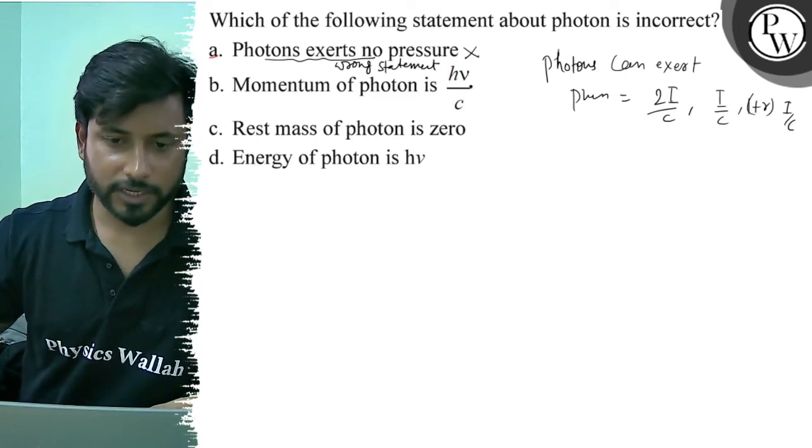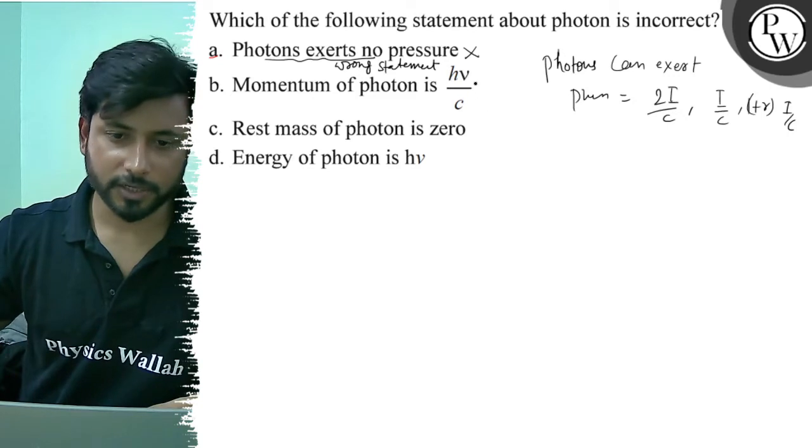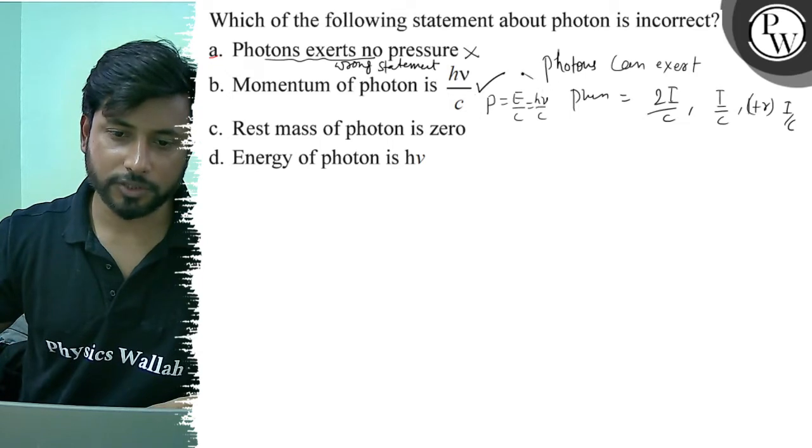Momentum of photon is H nu by C. This is correct. Because momentum equals to E by C, and E equals to H nu by C. So this is correct.